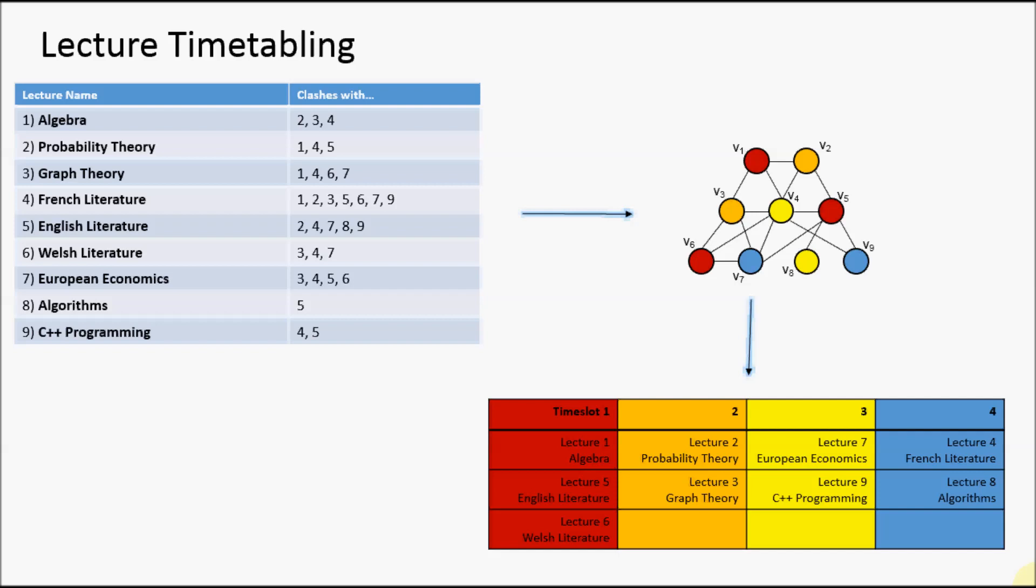Our final example concerns lecturing lessons and lectures at educational institutions. Let's imagine we're at a university and we wish to schedule some lectures. We have nine lectures here: algebra, probability theory, graph theory, French literature, and so on.